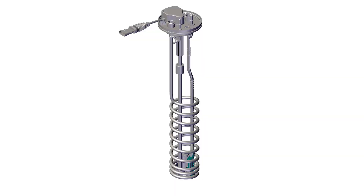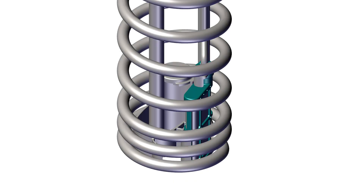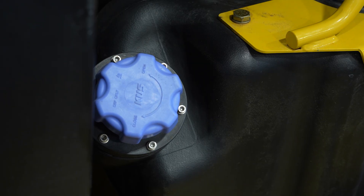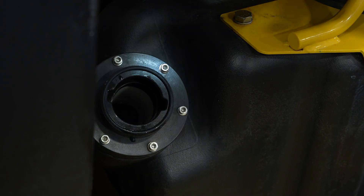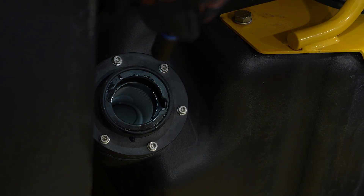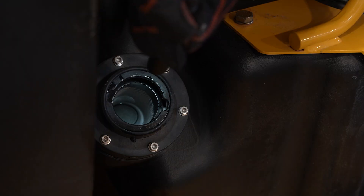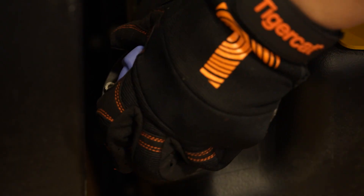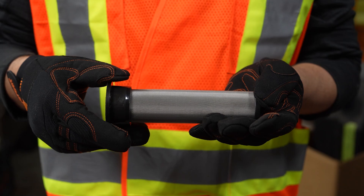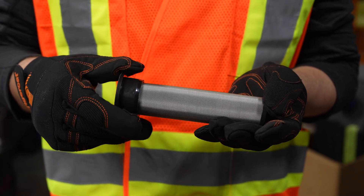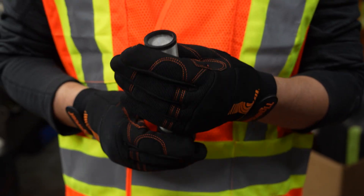Make sure that there is a gap between the DEF sending unit pickup strainer and the pickup tube — the strainer should not be pressed up against the pickup tube. Make sure that the DEF tank fill strainer is in place and free from dirt or obstructions. If the strainer is missing or damaged, the DEF tank must be cleaned to eliminate the chance of contaminating the system. Make sure to install a clean, undamaged strainer in the fill neck.